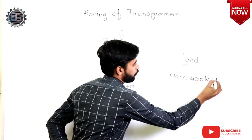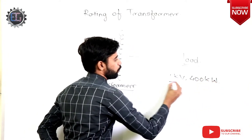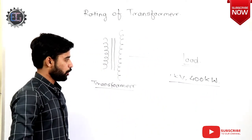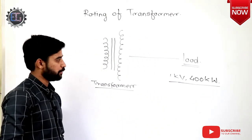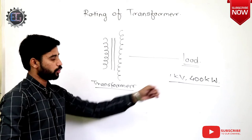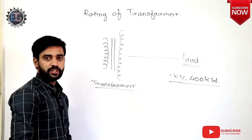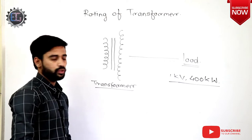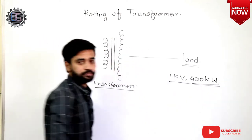Let me consider a specific load. The load demand is 400 kilowatts at 1 kilovolt. Notice that the load is specified in kilowatts because the load represents how much work that equipment will do, so the load is always specified in kilowatts.